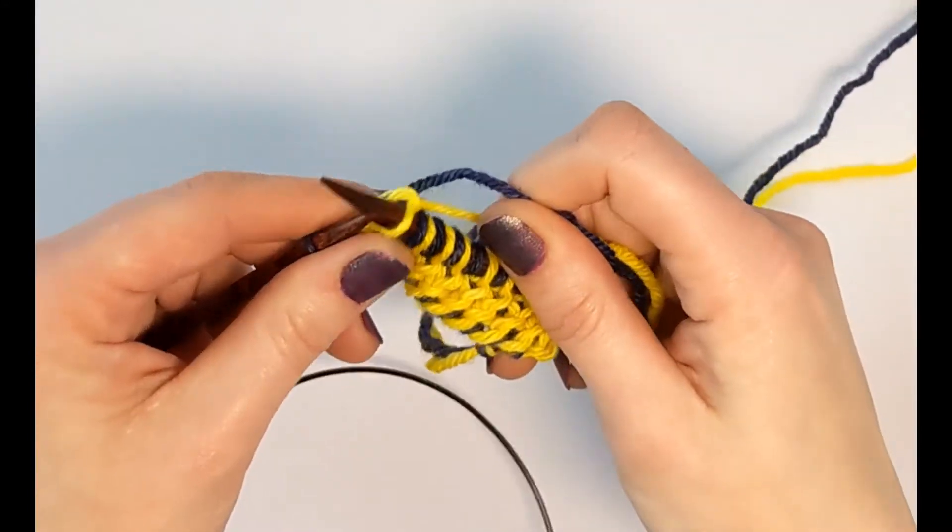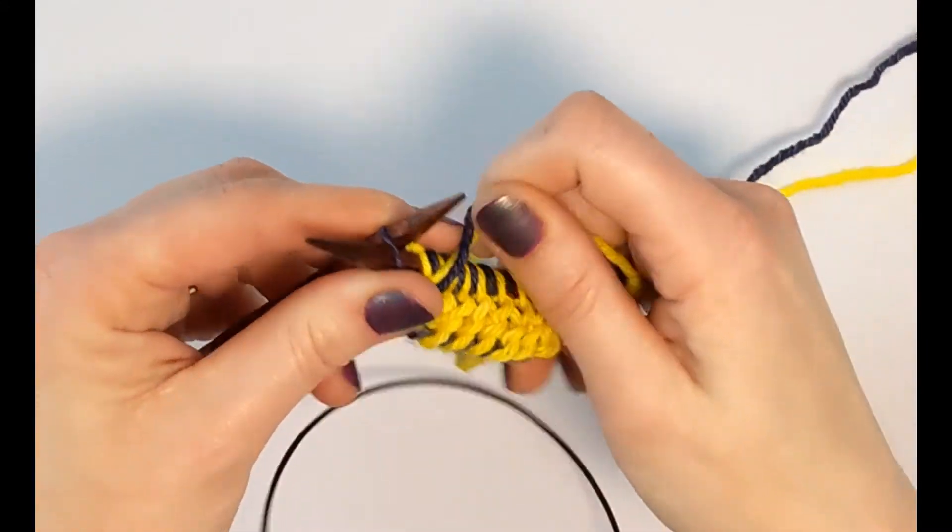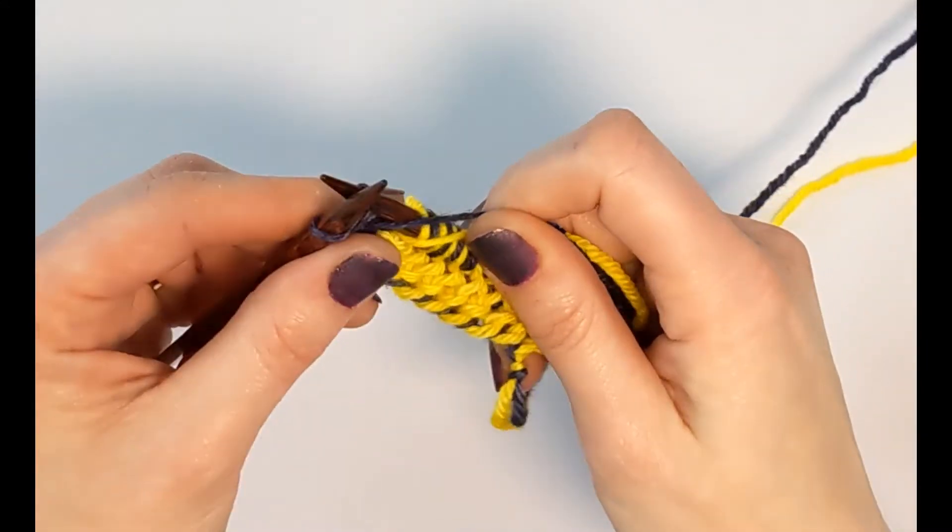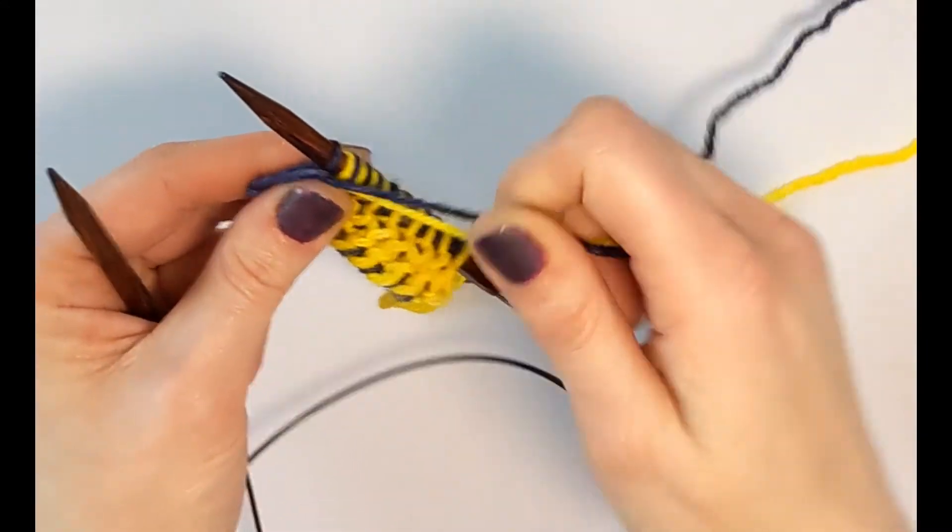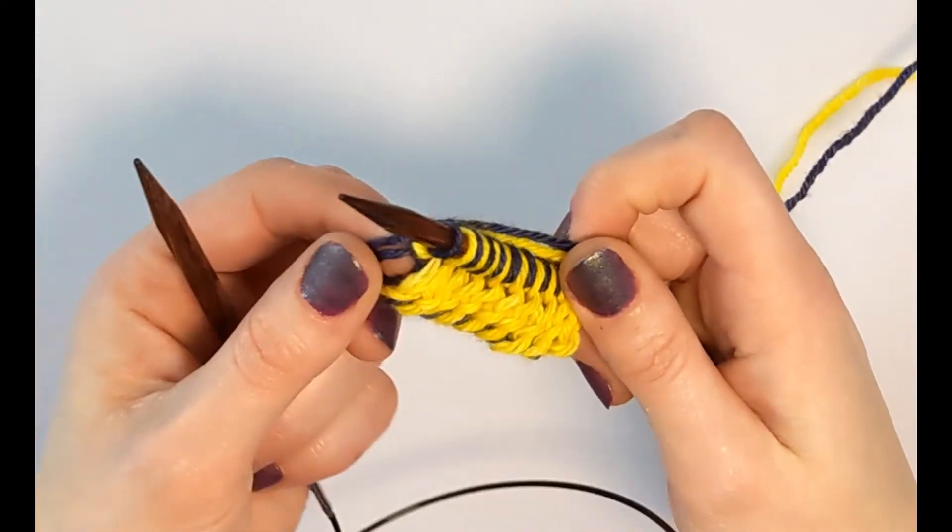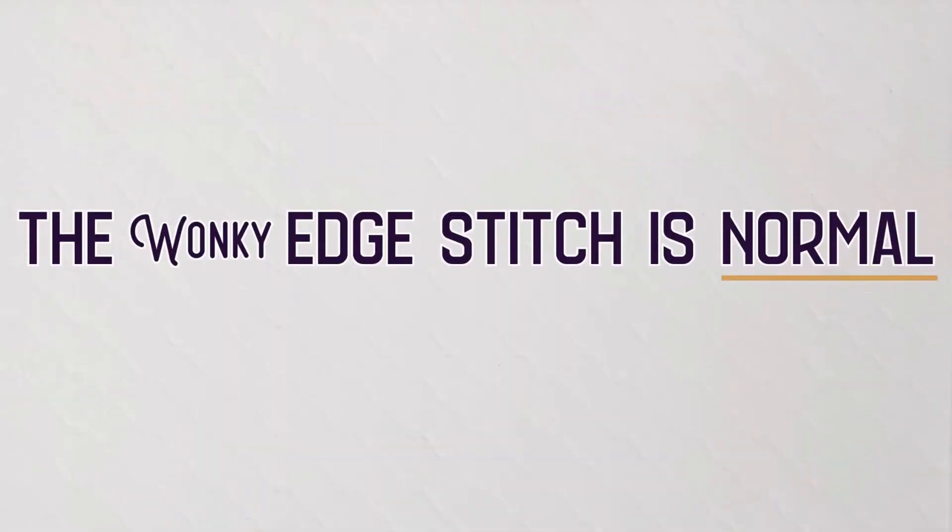When you get to the end of row two, you're going to notice a weird, loose, wonky stitch on the end of the row. Do not fret, this is normal, and it will even out as you complete more rows.